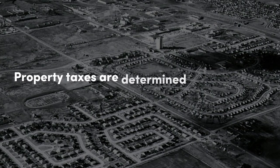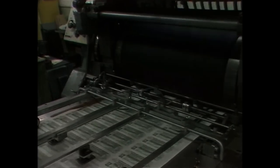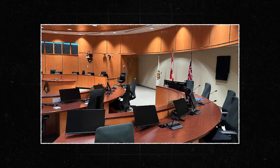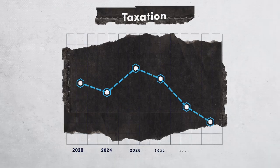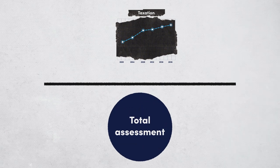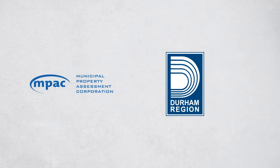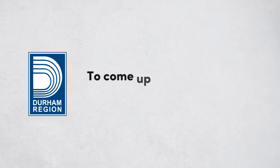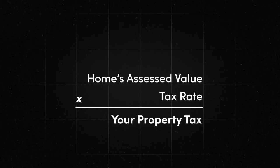Property taxes are determined after the budget is set. The amount to be raised by taxation is determined by adding the net operating budget plus any new staff requests, new business cases, and the library grant in a given year. This amount is then divided by the total assessment for the town as determined and maintained by MPAC, and tax ratios provided by the Region of Durham, to come up with tax rates for the different tax classes. The tax rate multiplied by the property assessment calculates the various property taxes owing for a given year.